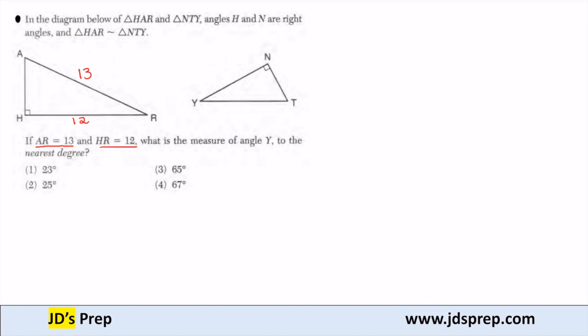We want to figure out the measure of angle Y, which is over here. So because these are similar triangles, I know that the measure of angle Y, which is what we're trying to find, is equal to the measure of angle R.